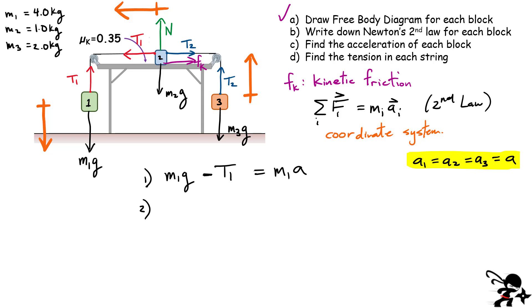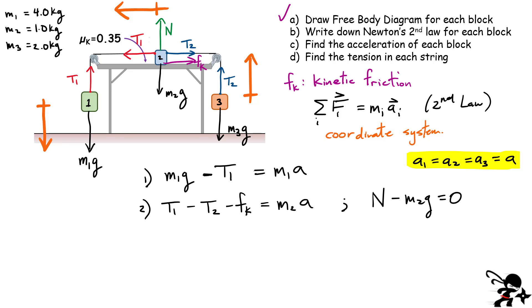For the top block, my coordinate system says everything pointing to the left is positive. I have positive T1, then T2 acting in the opposite direction so minus T2, and also minus the kinetic friction force. That's all the forces in the horizontal direction for that block, equal to M2 times acceleration A. For block two, in the vertical direction I also have the normal force minus the weight M2g equals zero — no vertical acceleration — which gives us that the normal force equals M2 times little g.